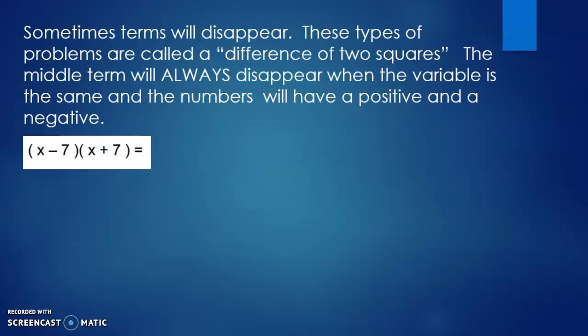Sometimes terms will disappear. x plus 7, x minus. Didn't even do, tried to do the Punnett square. Let me erase that. Still doing Punnett squares. Sorry, sorry, sorry. Okay, here we go. And then we do this, and we do x and a negative 7.